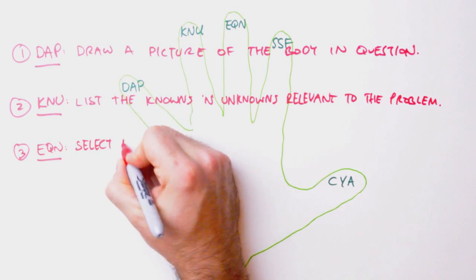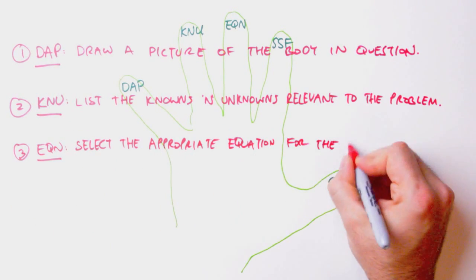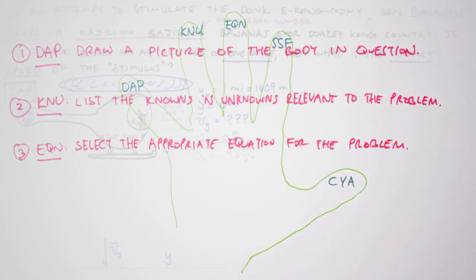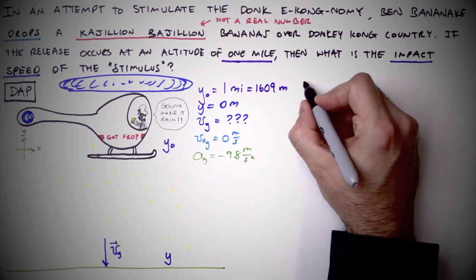Step 3. Select the appropriate equation for the problem. This step is the crux of physics problems, and for green physics students, pardon the etymological pun, the bane of their studies.